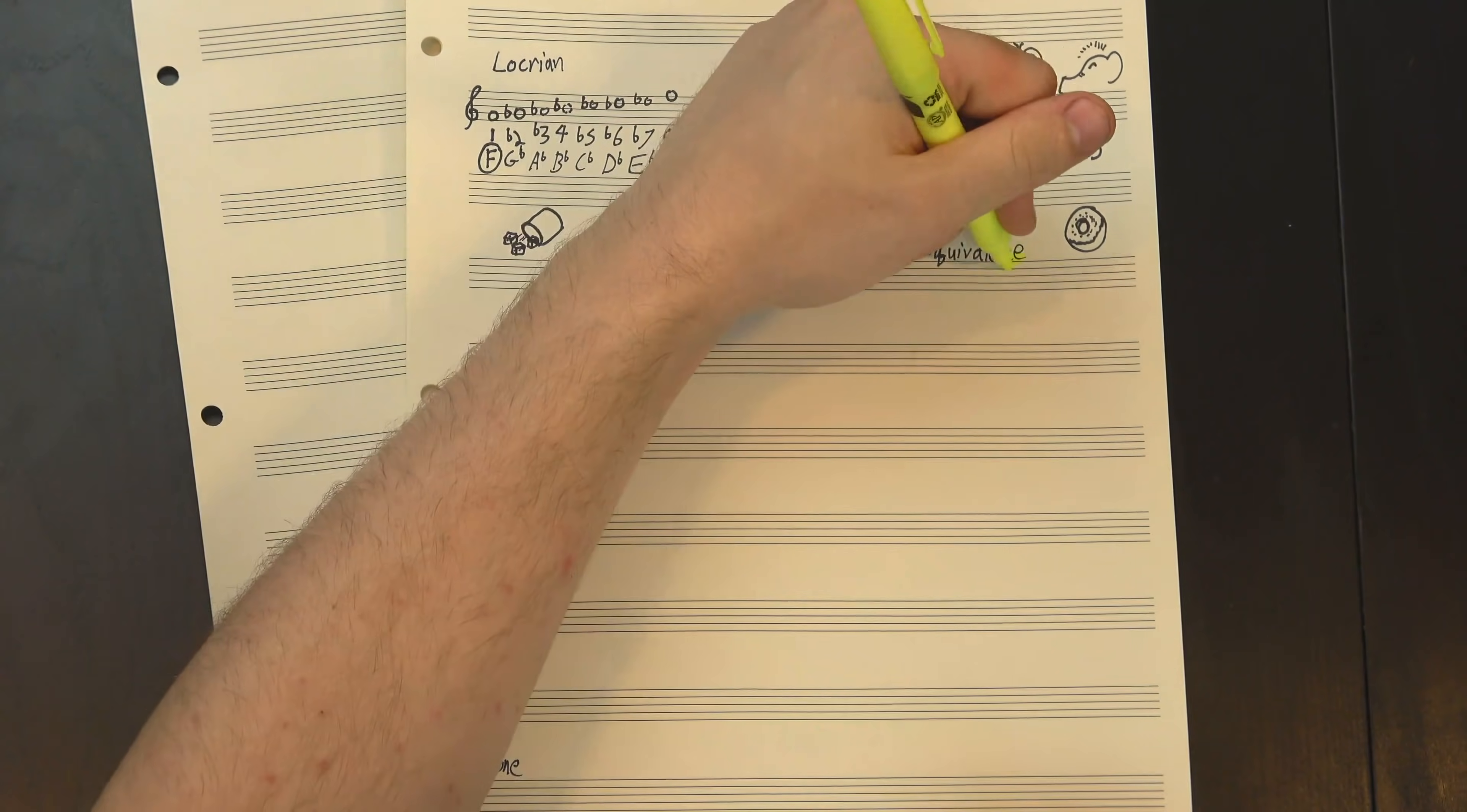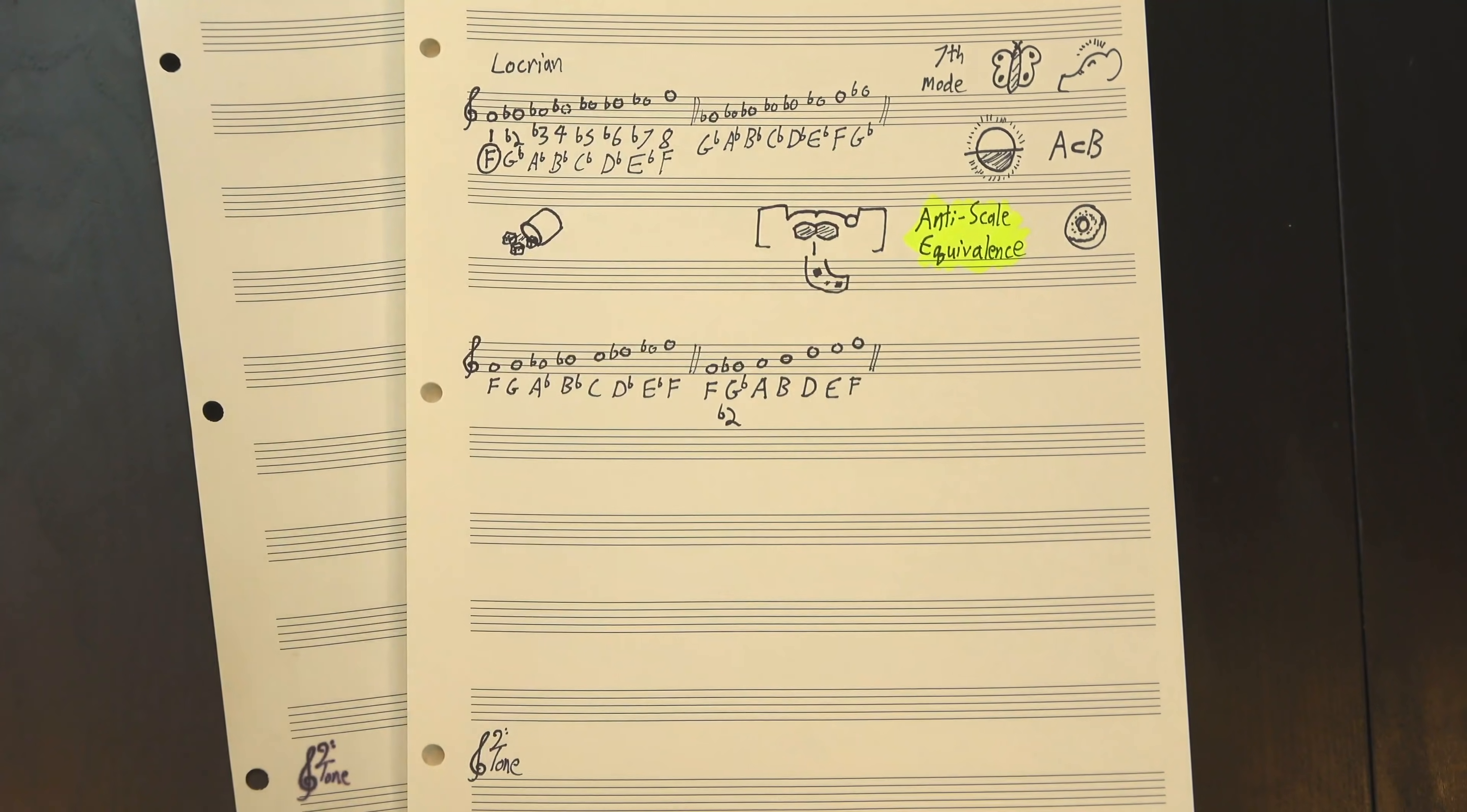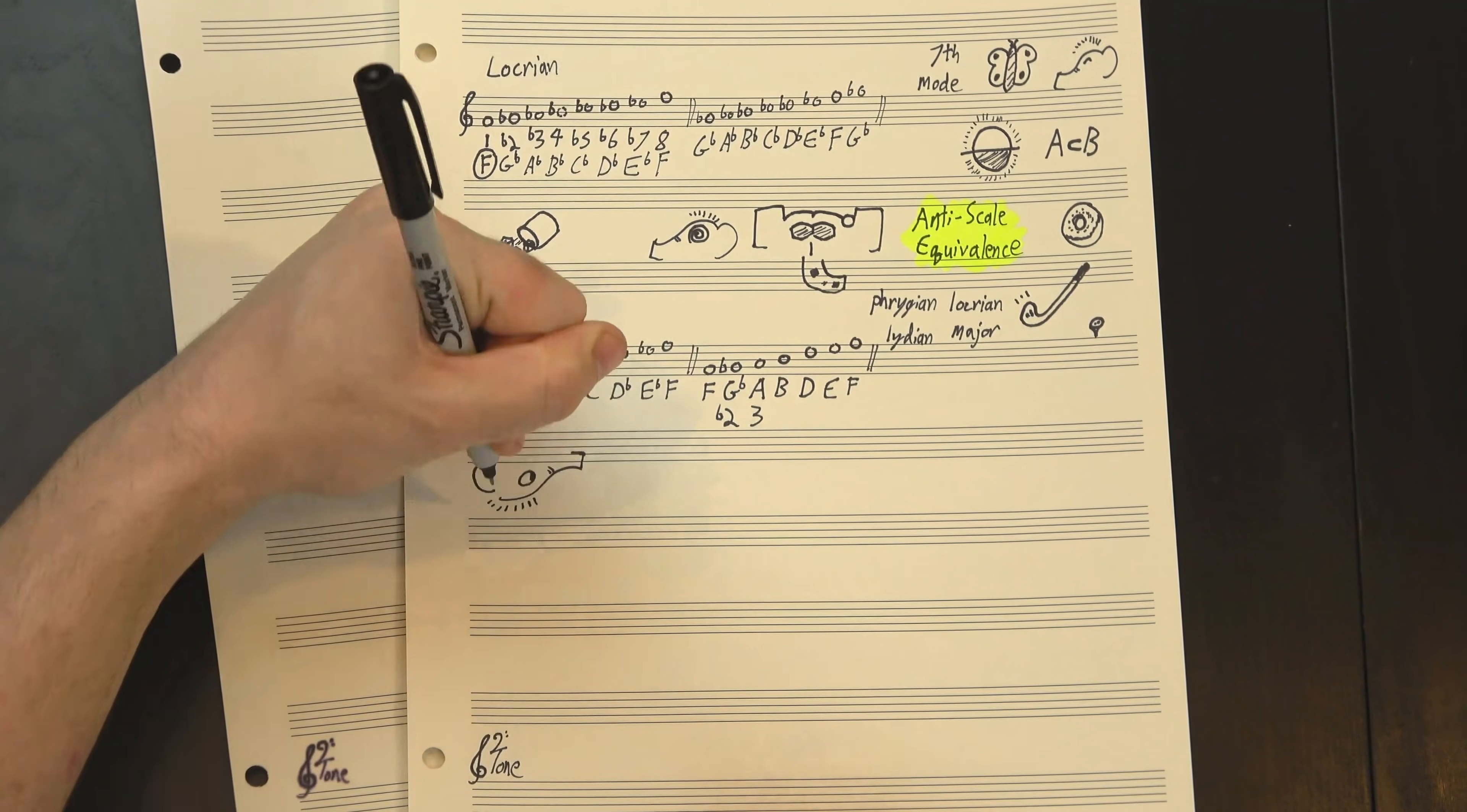I decided to call this property anti-scale equivalence, and unlike with complements, it's not modally invariant. Like, natural minor is another mode of major, but if we take its anti-scale we get something with a minor second and a major third, which is an interval pattern that none of minor's modes have. Going through, only four of major's modes have this equivalence: major, locrian, lydian, the fourth mode, and phrygian, the second. The other three all flip into weird scales from outside the modal family.